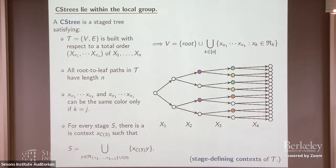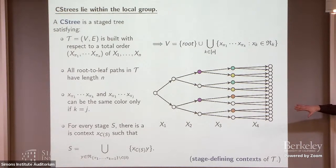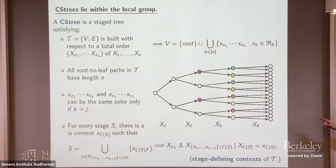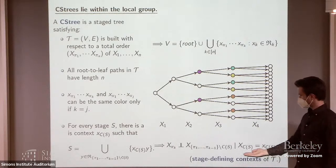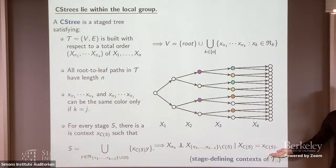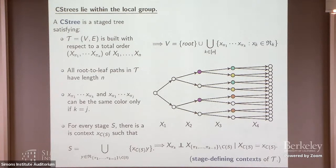So why would I do all this work? I want something that is similar to DAGs. This actually allows our stages to be associated to very specific types of CSI relations. Now we can think of our model as being generated by these relations, as opposed to just the multiplication along root-to-leaf paths. So now we have, in some sense, a local Markov property.